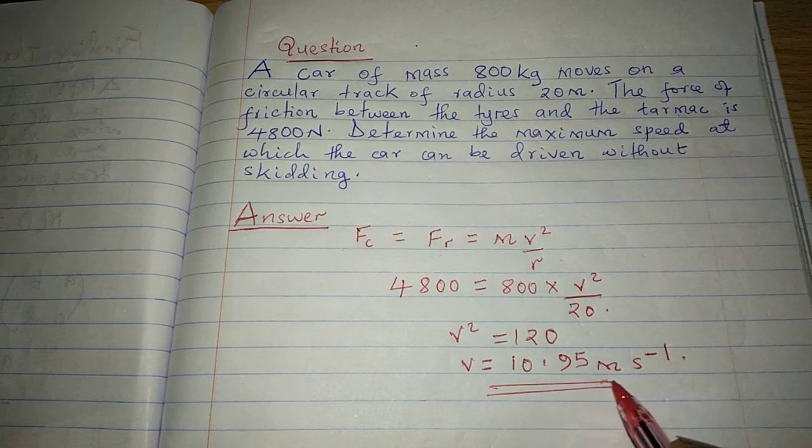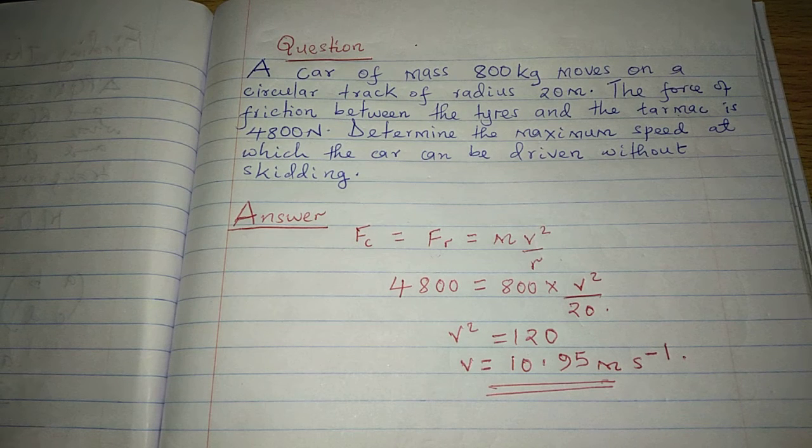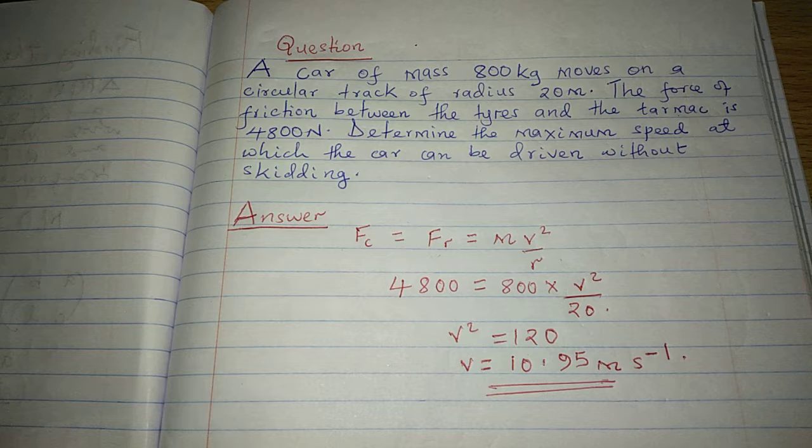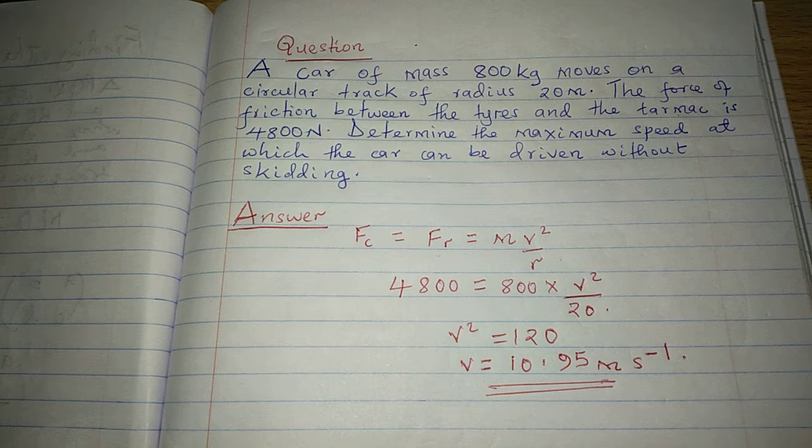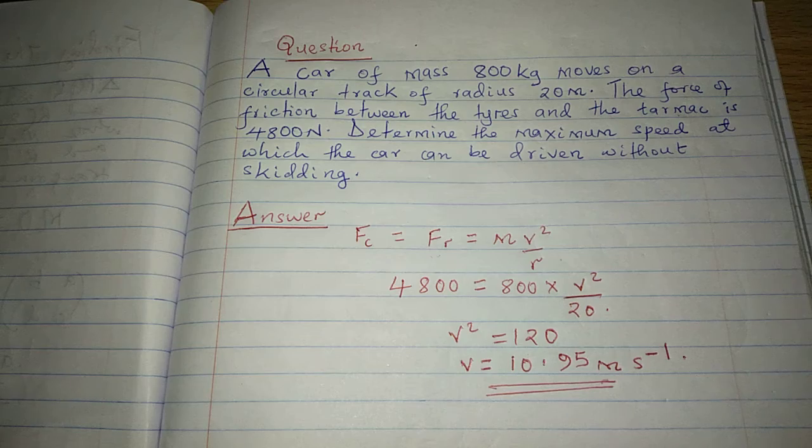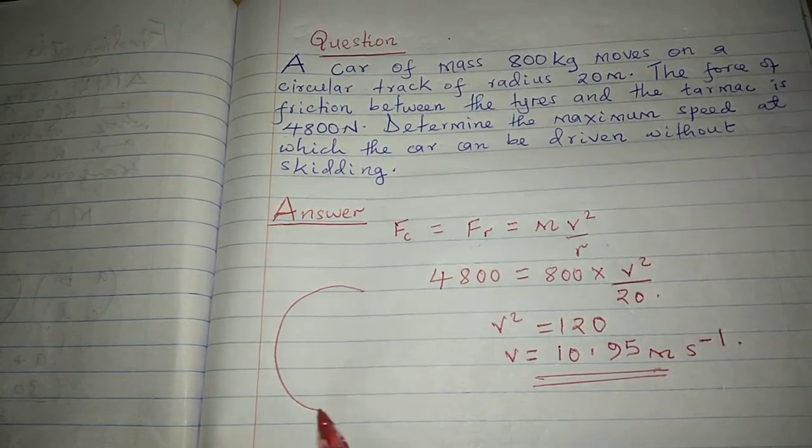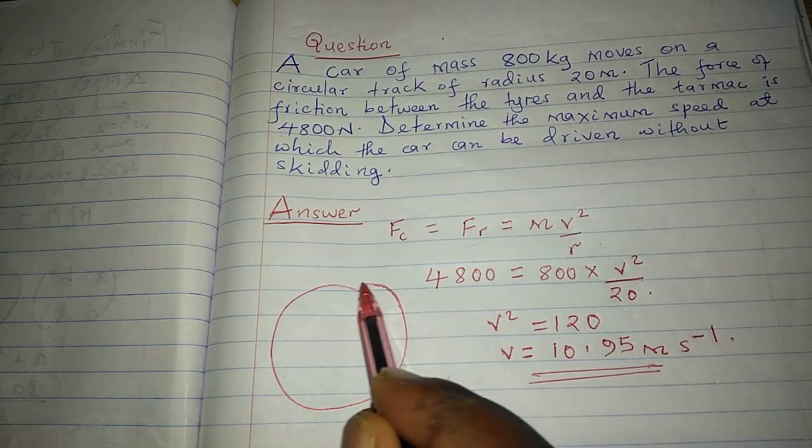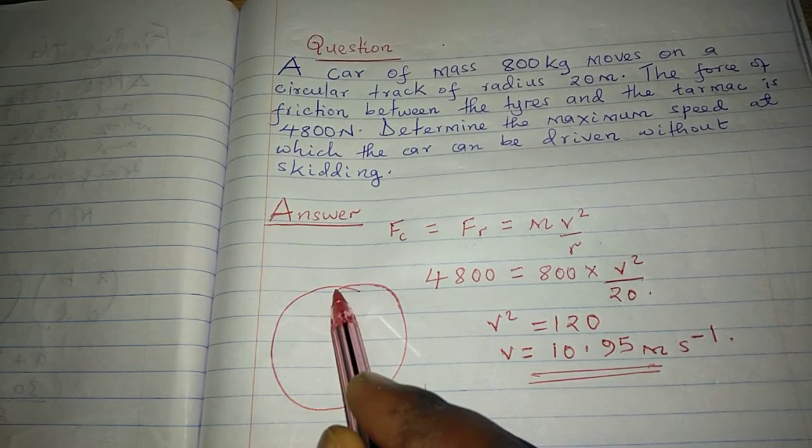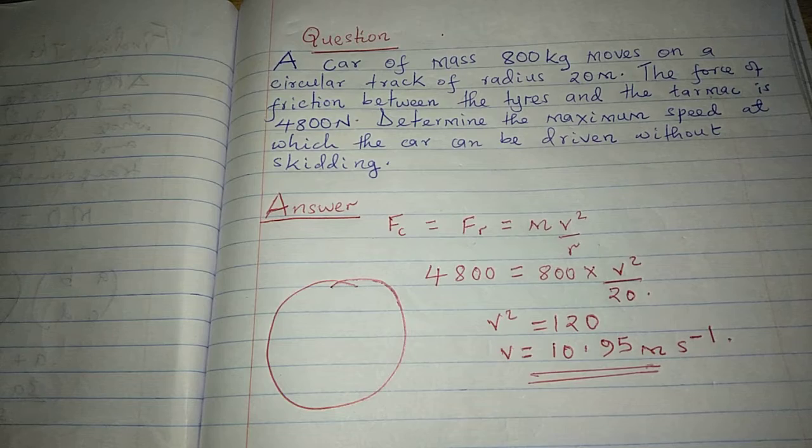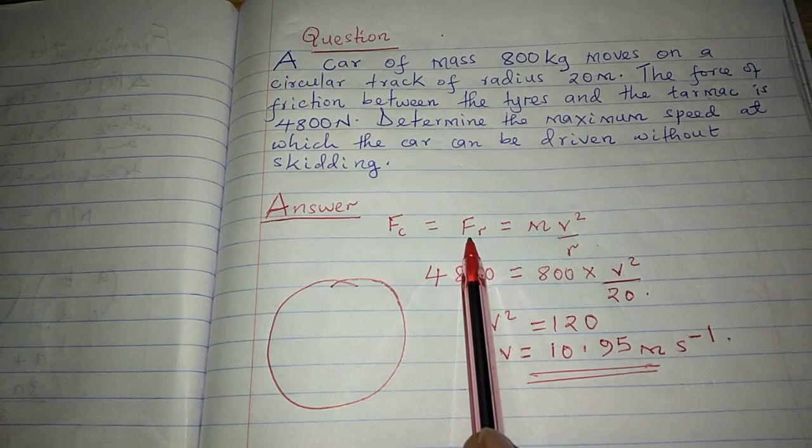So this is the speed beyond which this car is going to slide off or skid off from the circular path. Remember, there must be a certain speed beyond which the centripetal force will be greater than the frictional force.